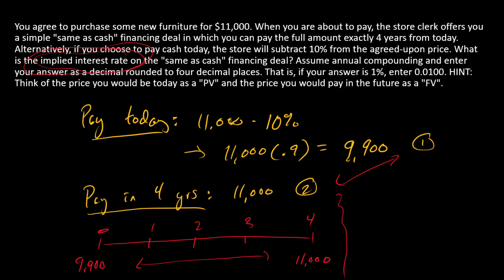We're going to say that $9,900 is equal to the present value of $11,000 four years from now. So we've got 1 plus R in the denominator raised to the fourth power.